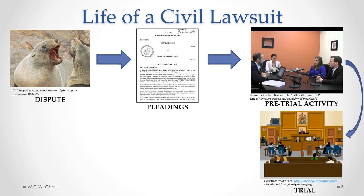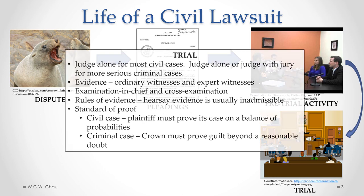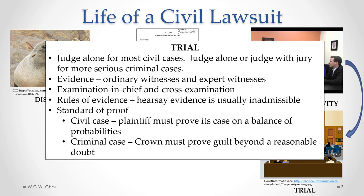If after all that pretrial activity there is still no settlement — and more than 95% of cases are settled before reaching trial — then we have to go to trial. In civil cases, it's usually a judge alone who hears the case and makes the decision. With more serious criminal cases, there's usually a choice between either a judge alone or a judge with a jury. With a jury, the matter of guilt or innocence is decided by the jury.